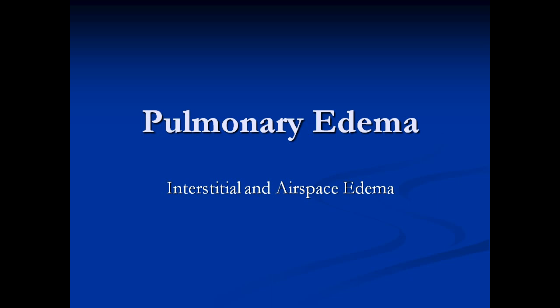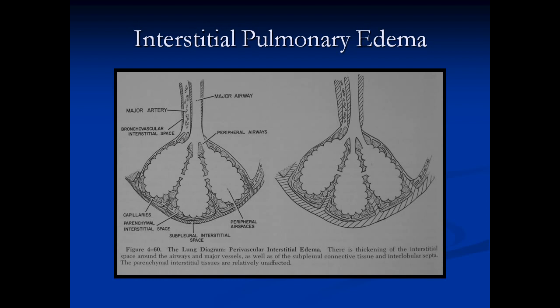Now we're going to talk about pulmonary edema — interstitial and airspace edema, which are two different entities radiologically. When interstitial pulmonary edema develops, the first thing that happens is right heart pressure increases and you get outpouring of fluid from the vascular tree into the interstitial spaces. This happens in patients with heart failure or other conditions. You get thickening of the interstitial space around the bronchi and arteries, causing them to look larger and ill-defined — you've got soft tissue around them, so you won't see them as clearly as before.